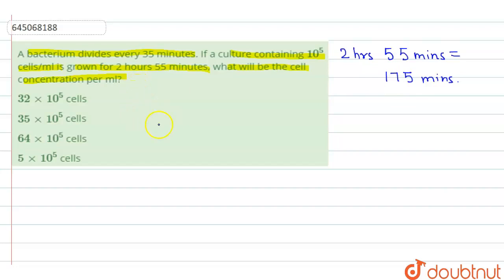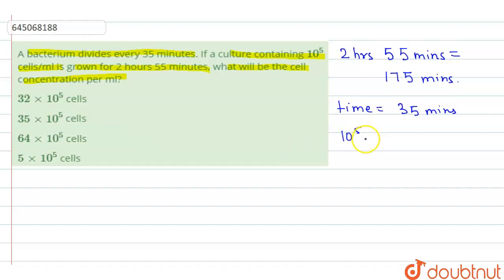The bacterium is dividing every 35 minutes. The culture is containing 10 to the power 5 cells per milliliter. So if they are grown for 175 minutes, what will be the cell concentration per milliliter? Let's work through this step by step.